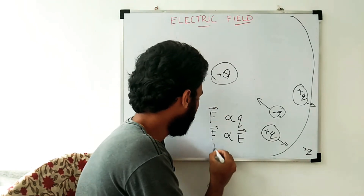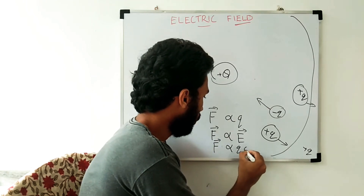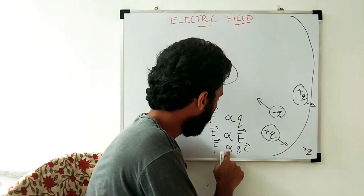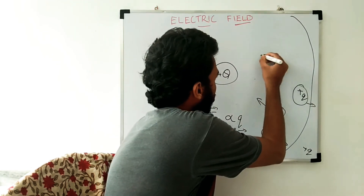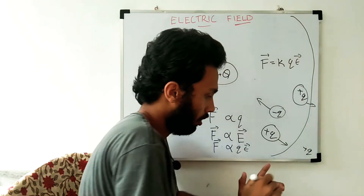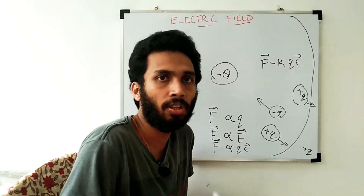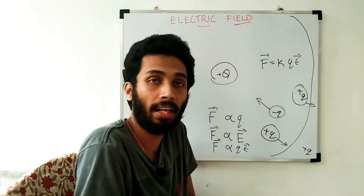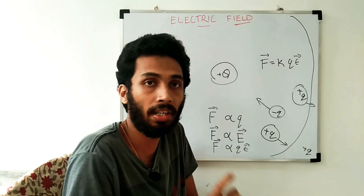If you combine these two equations, F-vector is proportional to qE-vector. If you add this proportionality, you can add equals. F-vector equals k times qE-vector. K is a constant — the proportionality constant. In this case, we have a constant value.